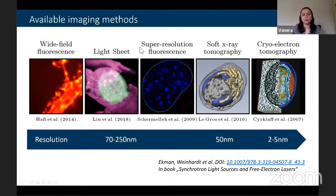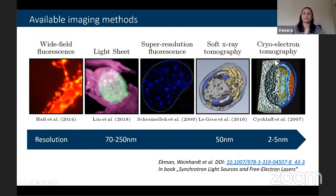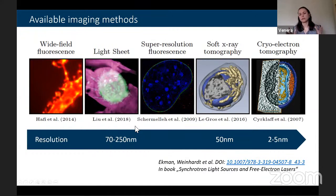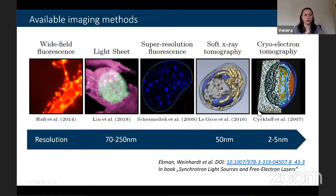On one side there are light microscopy techniques — particularly fluorescent microscopy — with a resolution of around 200 nanometers, used on a daily basis and almost ubiquitous in research. Then there are electron-based methods such as electron tomography, cryo electron tomography, and scanning electron tomography, which provide very high resolution of a few nanometers. Between those two groups there is a natural gap, currently occupied by a method called soft x-ray tomography, which can provide spatial resolution from around 50 to 70 nanometers and is applicable for imaging single cells.